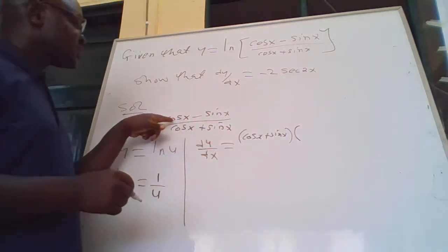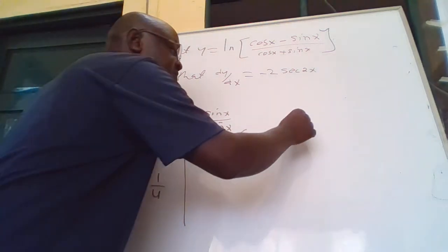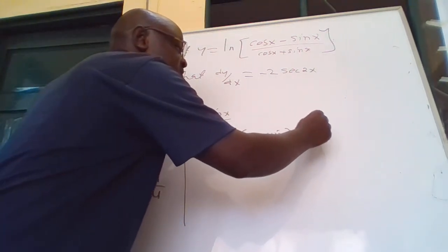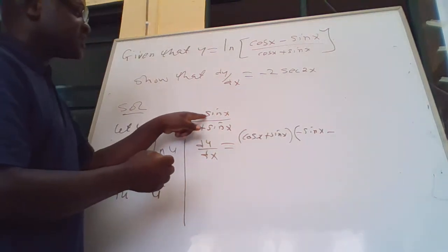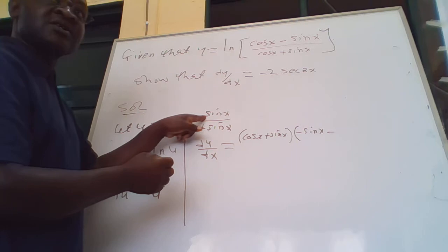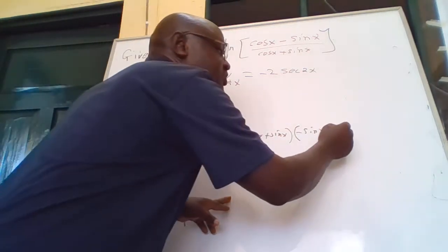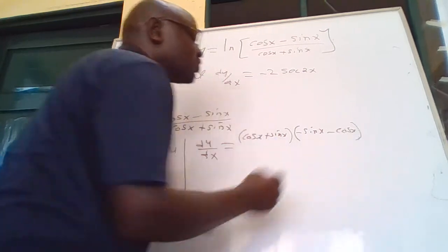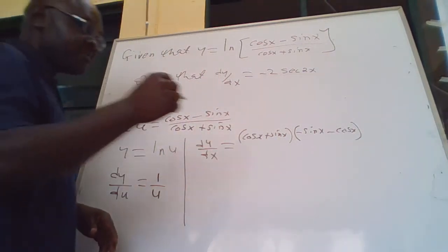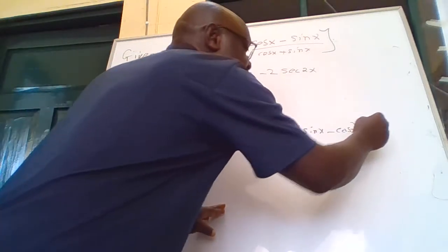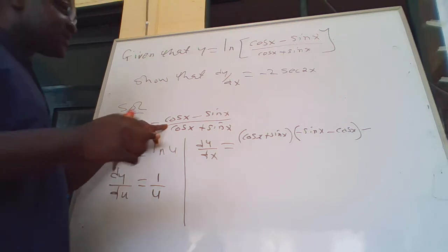When you differentiate the top — when you differentiate cos x you get negative sin x, minus when you differentiate sin x you get cos x, but you already have a negative, so you have negative cos x. Then minus, we put down the top, which is cos x minus sin x.